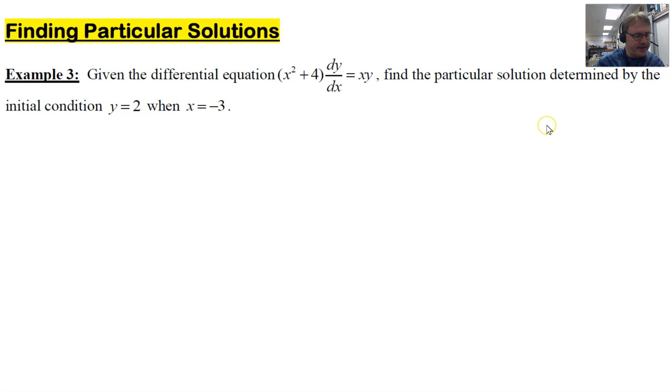Given the differential equation (x² + 4) dy/dx = xy, find the particular solution determined by the initial condition y = 2 when x = -3.